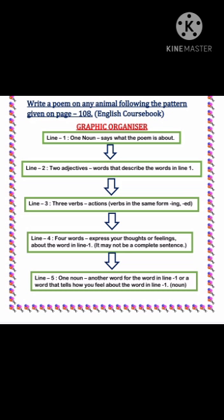Then, in line number 4, we will write four words which express your thoughts or feelings about the word in line number 1. It may not be a complete sentence. Now, in line number 5, we will write one noun — another word for the word in line number 1, or a word that tells how you feel about the word in line number 1.